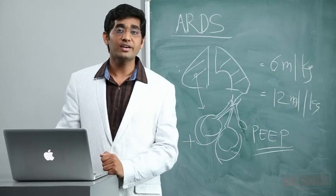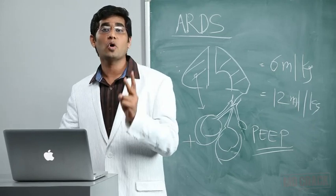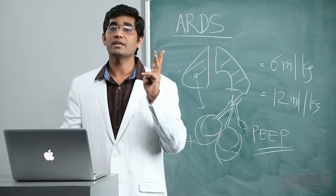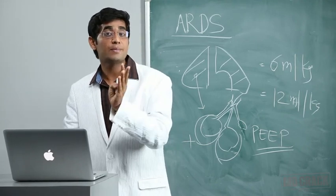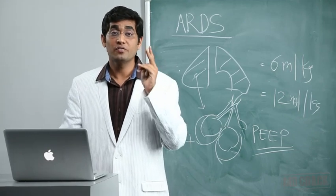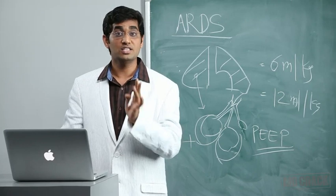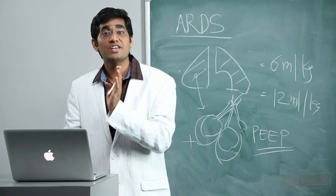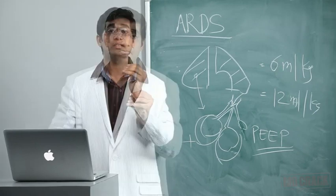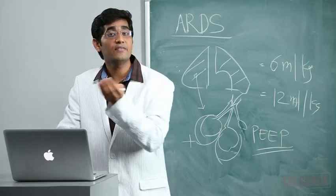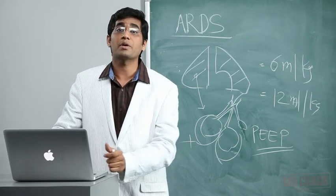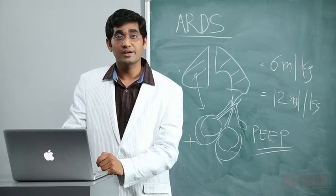Regarding fluid restriction and diuretics in management of ARDS, there are two major points. First is to maintain tidal volume lower at 6 ml per kg. Second most important point is fluid management. You need to restrict fluids or give diuretics. This is helpful in maintaining left atrial wedge pressure on the lower side and will prevent pulmonary edema in ARDS patients.